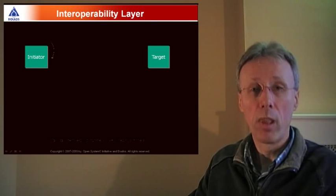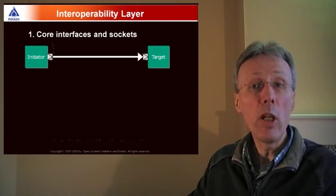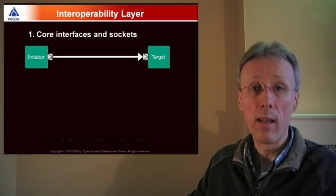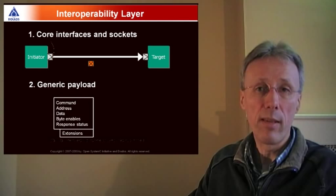So the TLM 2 interoperability layer achieves that with three steps. Step one is to make use of the TLM 2 core interfaces and sockets. So each TLM 2 initiator and target will instantiate a socket and those sockets allow function calls using the core interfaces. The second step is to make use of the generic payload. So the generic payload captures a set of attributes that are typical of memory mapped buses.